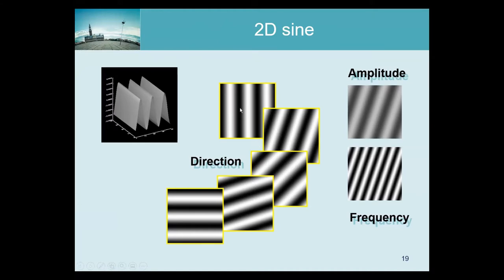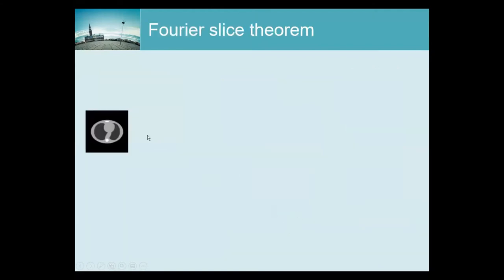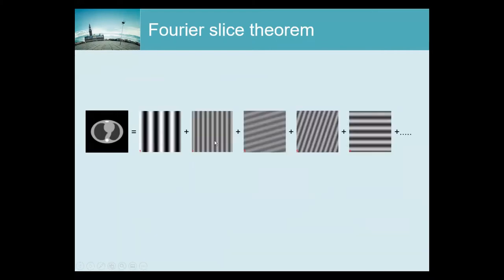These are all the two-dimensional sines and cosines. They oscillate in different directions, can have a different amplitude, different frequency, and a different phase. If we take a Fourier transform, we rewrite the image as the sum of all these sines. All these things are linear, so a projection of this equals the projection of each of these components. If we add all these projections, we should get the total projection.